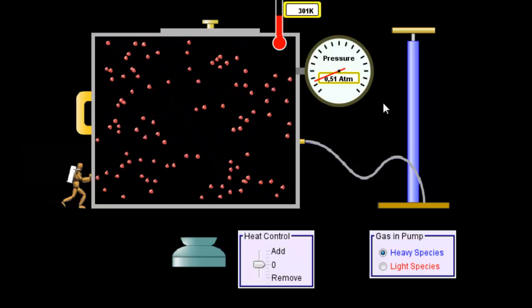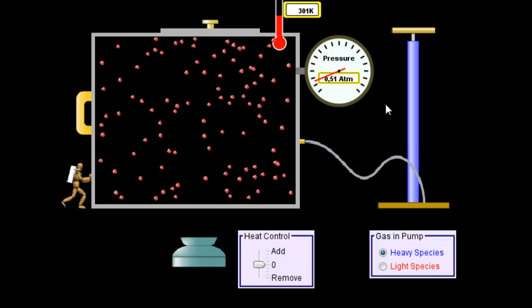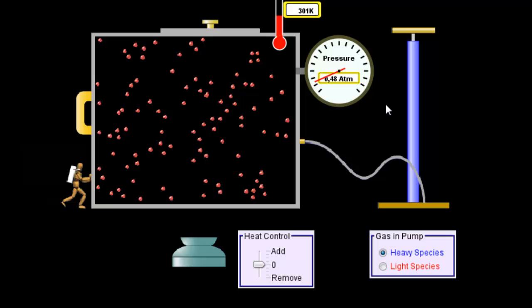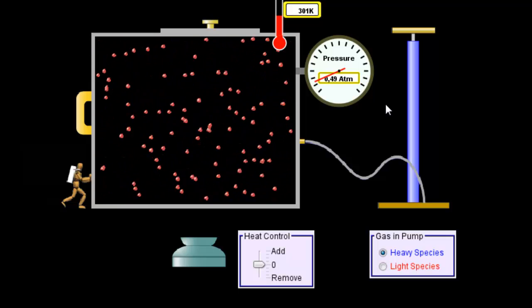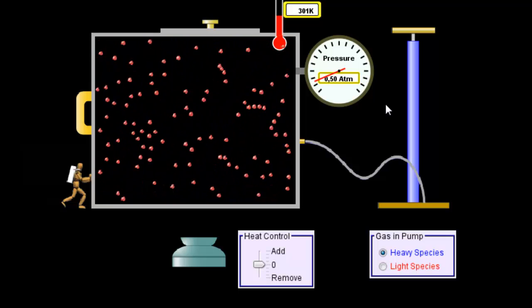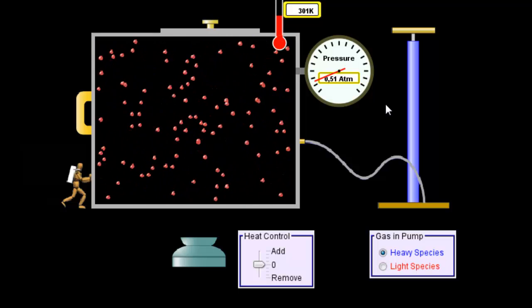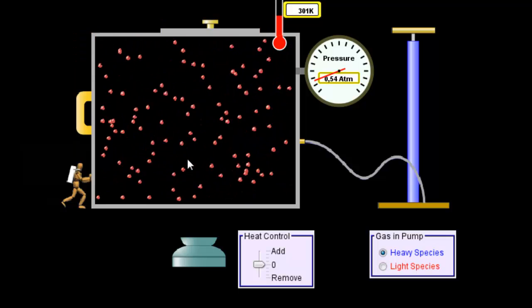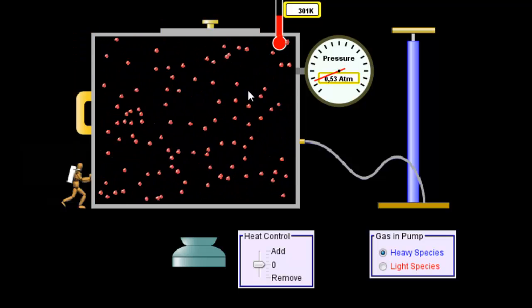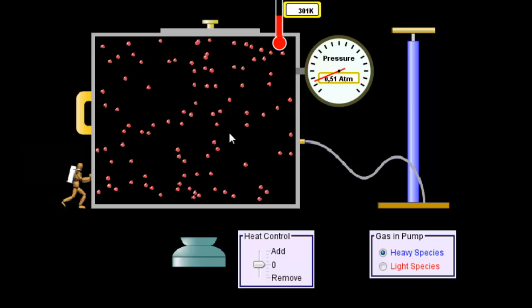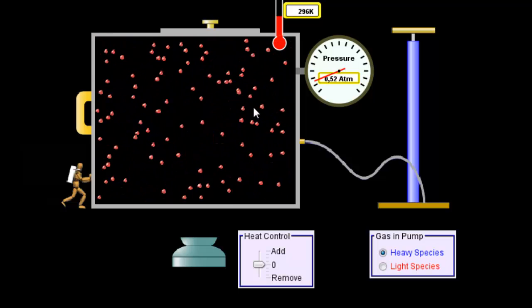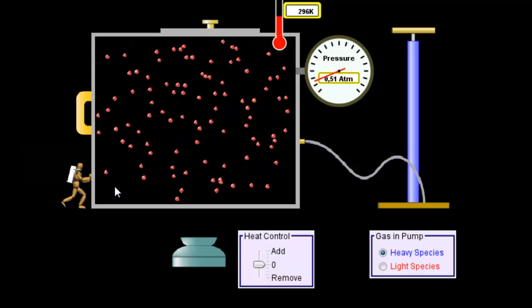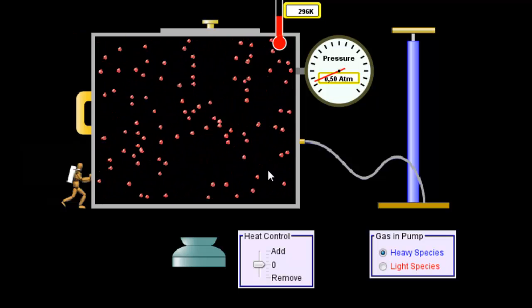Let's talk about pressure. For something to feel pressure, there has to be force acting over a certain area. In this case, the area is the inside of this container. Here on the screen is a two-dimensional box, and the area can be defined by the length times the width of this box.